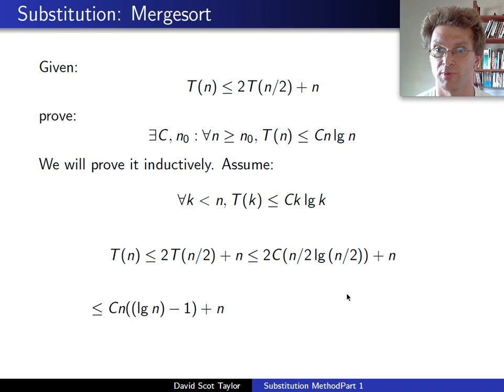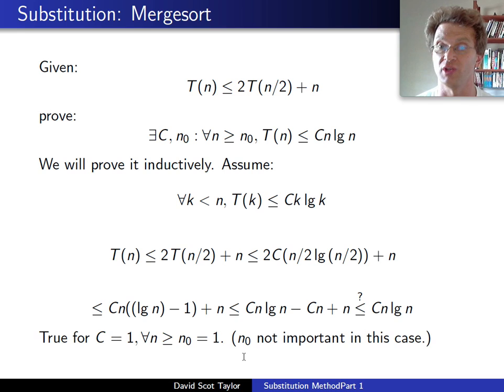We're going to take the same approach. We start with our recurrence relation. T(n/2), k equals n/2 is less than n, we can plug in for it. Now we get a little bit more algebra. 2 times n/2 is just n. Log of n/2 is log of n minus 1. We do our algebra. Is this term less than Cn log n? It's true if Cn is at least as large as n. Well, it's true for C equals 1. And again, it happens to be that n₀ is not so important in this case. So there we go, works for merge sort.